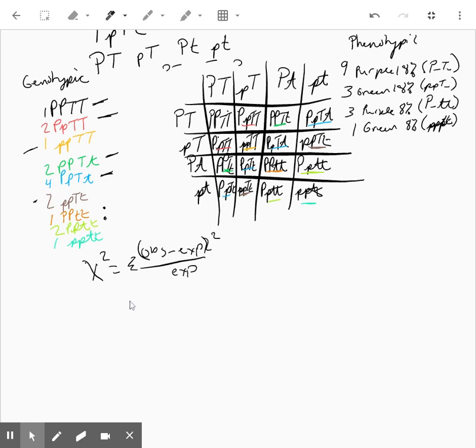So we're going to take our observed values for each phenotype, purple 18%, green 18%, purple 8% and green 8% and get your observed values.